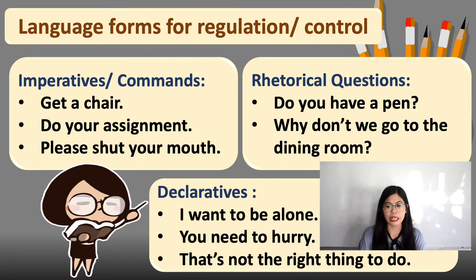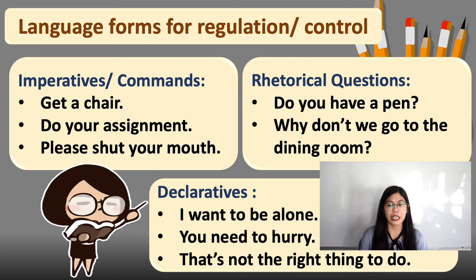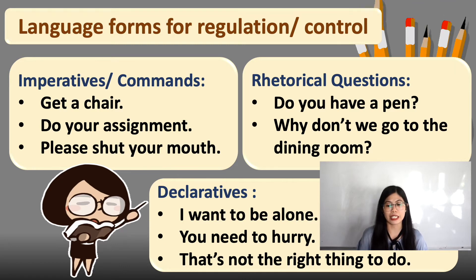Next, we have declaratives — statements where a person says something and wants the listeners to do something in response. It's like 'do what you are told to do.' Examples include: 'I want to be alone,' 'You need to hurry,' and 'That's not the right thing to do.' Those are declaratives.